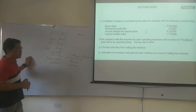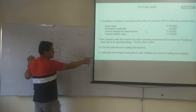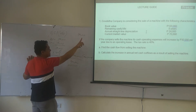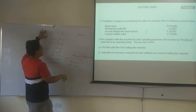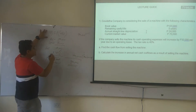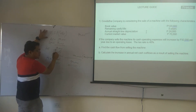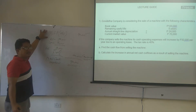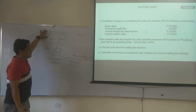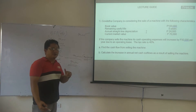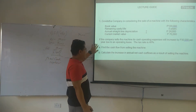We sold the machine at 70,000, and by applying the tax savings of 20,000, we have a total cash inflow of 90,000. That is our answer for that.